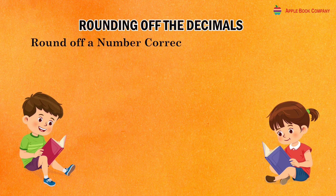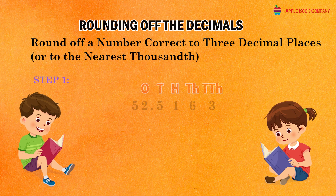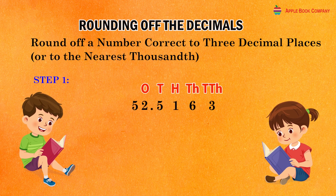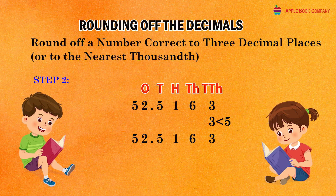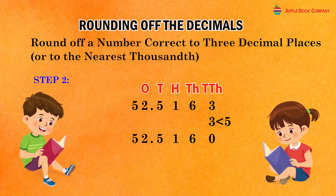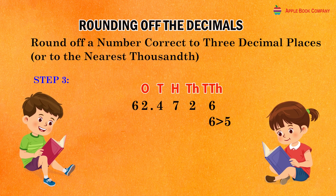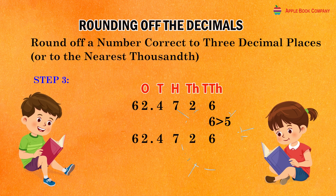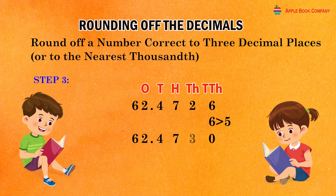Rounding of a number correct to three decimal places or to the nearest thousandth. Check the digit at the fourth decimal place. If the digit at the fourth decimal place is less than 5, replace each digit at the fourth decimal place and onward along the right side by zero and keep all the digits before the third decimal place as they are. If the digit at the fourth decimal place is 5 or greater than 5, replace each digit after it along the right side by zero and increase the digit at the third decimal place by one.